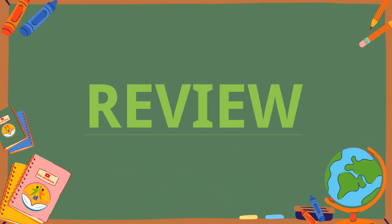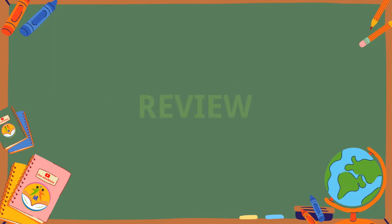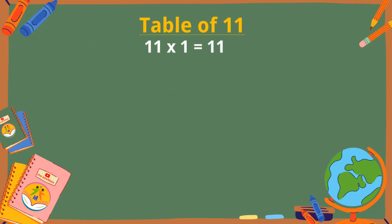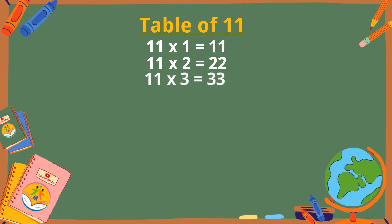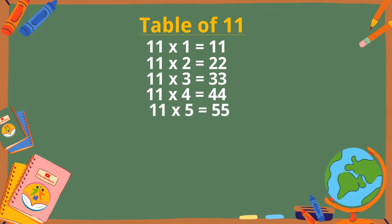Let's revise the table of 11. 11 ones are 11. 11 twos are 22. 11 threes are 33. 11 fours are 44. 11 fives are 55.